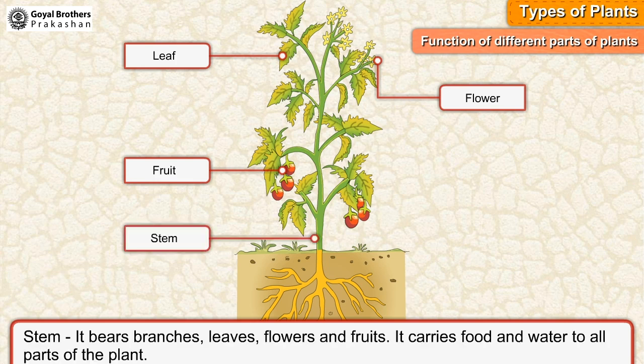Stem — it bears branches, leaves, flowers, and fruits. It also carries food and water to all parts of the plant.